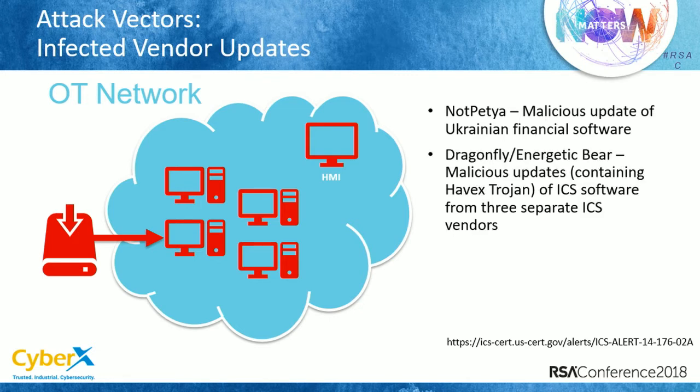The second example is Dragonfly — an allegedly Russian attack group that attacked in the States. What they were doing was pushing malicious updates inside ICS vendor software. Once clients using that ICS software downloaded the updates, they got infected with the Havex malware.